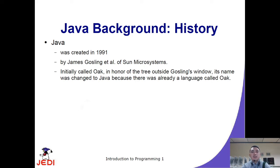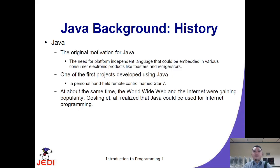The first name of Java was Oak, in honor of the tree outside of Gosling's window. However, it was changed due to the fact that there was already a programming language called Oak at that time, so it was later changed to Java. The motivation for creating Java was a language that could be embedded in different consumer appliances or electronic products — it would serve as the automation program for those consumer products.